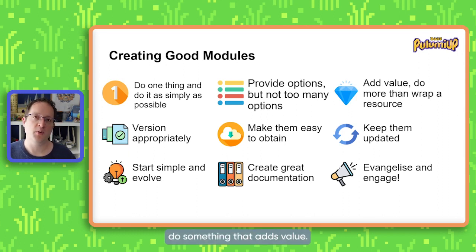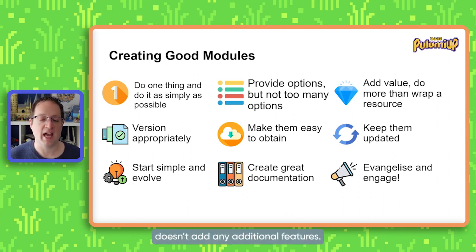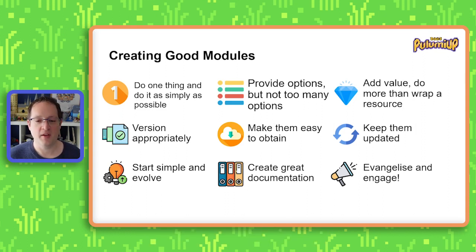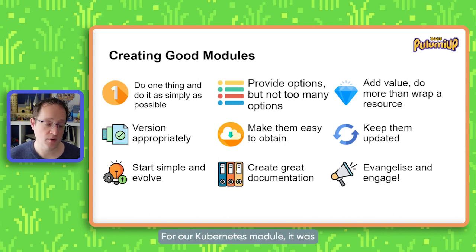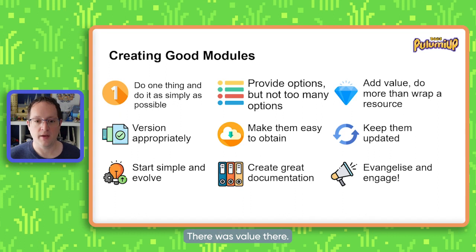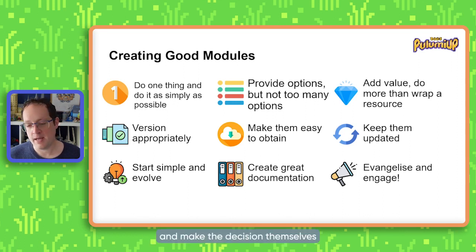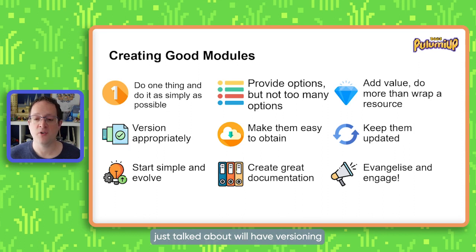Similarly, your module needs to do something that adds value. There is no point creating a module that just wraps something really simple and doesn't add any additional features. Take a resource group in Azure — it's a very simple resource taking three parameters: a location, a name, and some tags. There's no point creating a module that just wraps a resource group. For our Kubernetes module, it was simplifying the interface, deploying security defaults, and making a very easy to deploy cluster. There was value there. You also need to make sure you version your modules. People are going to consume them, and they want to know when there are new versions and whether there are breaking changes, so they can decide when to update.